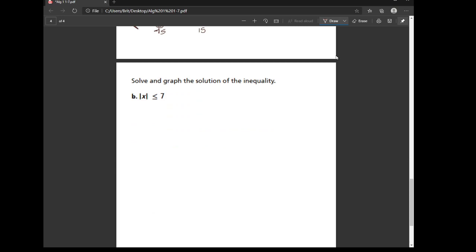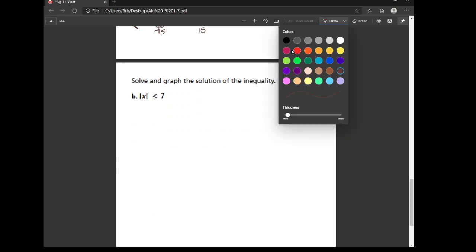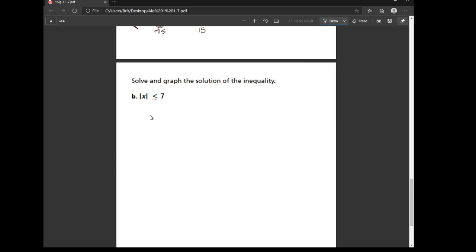Okay, let's try one last one. So again, the absolute value is isolated. So we're going to split it into two equations. The first one looks the same without the bars. The second one, you flip the inequality and you change it to a negative.